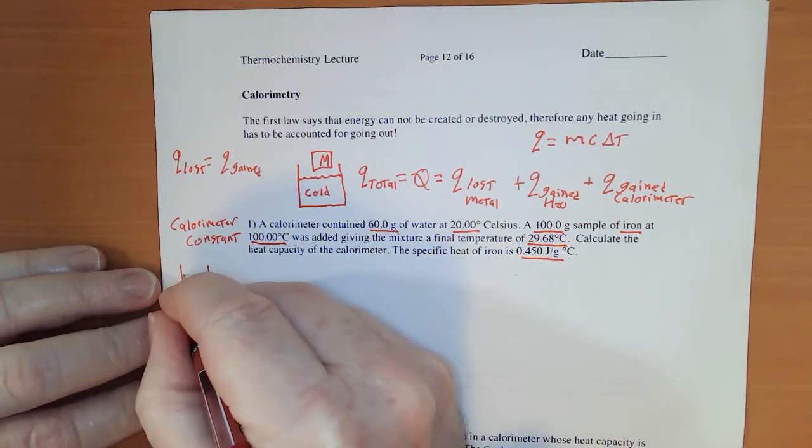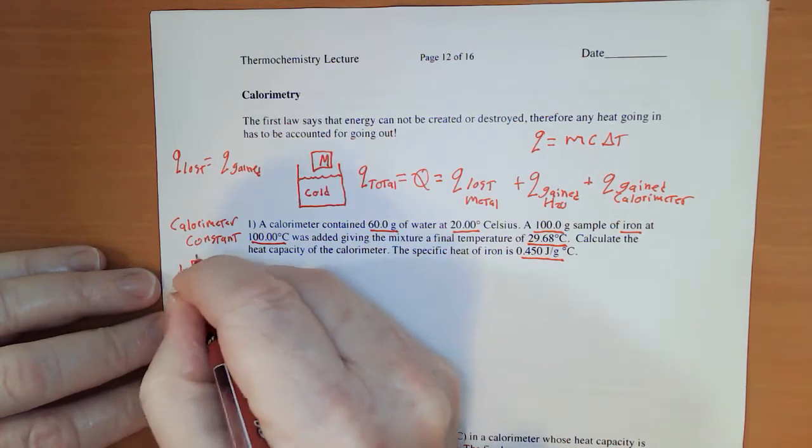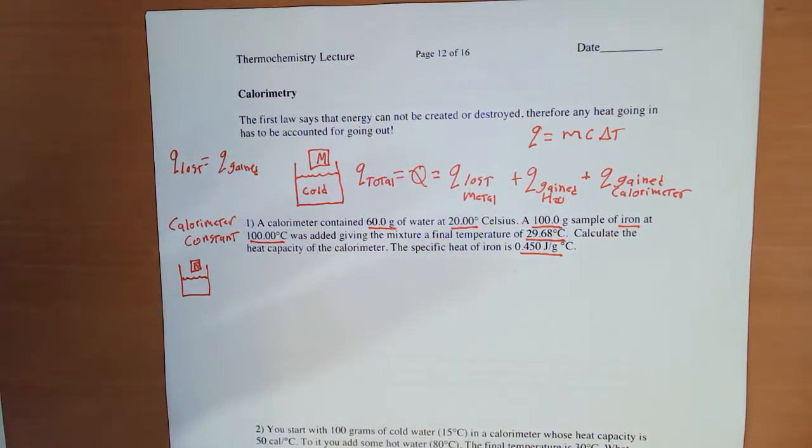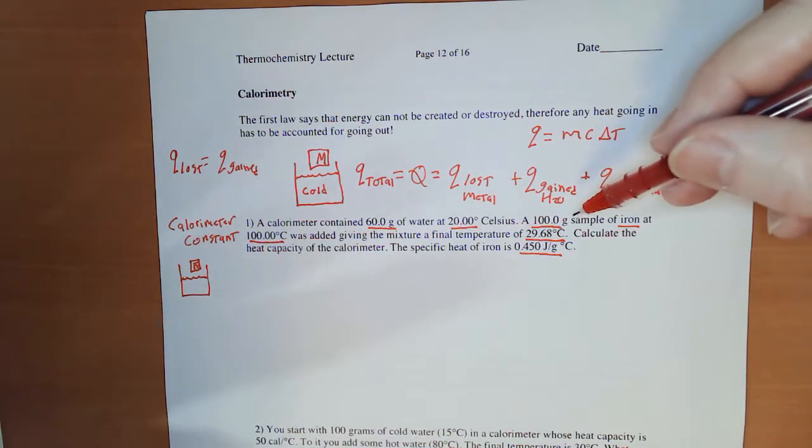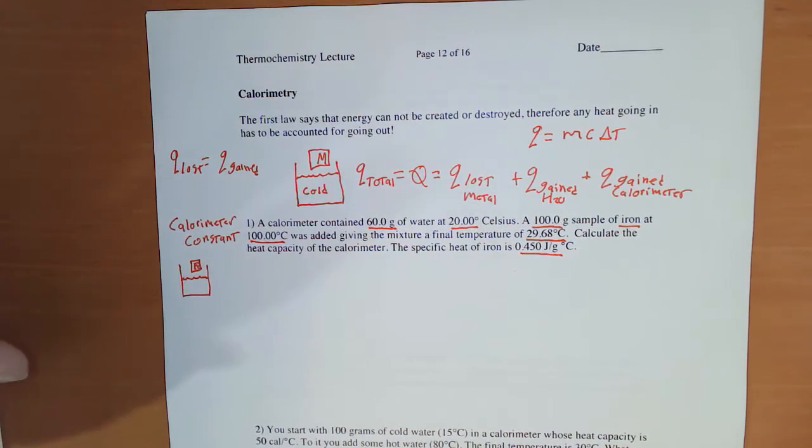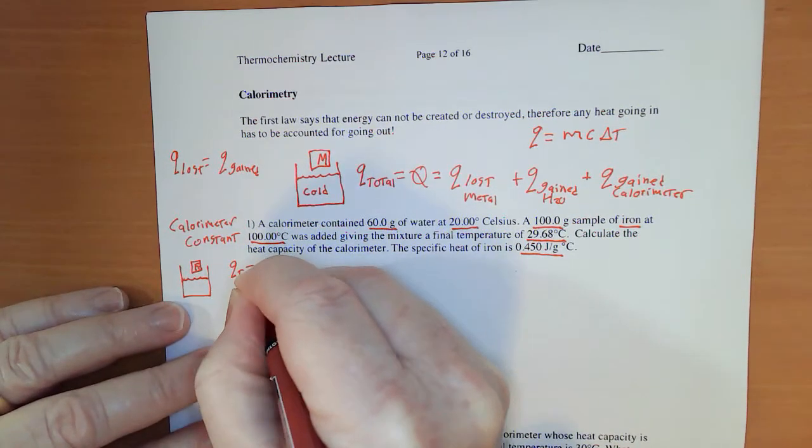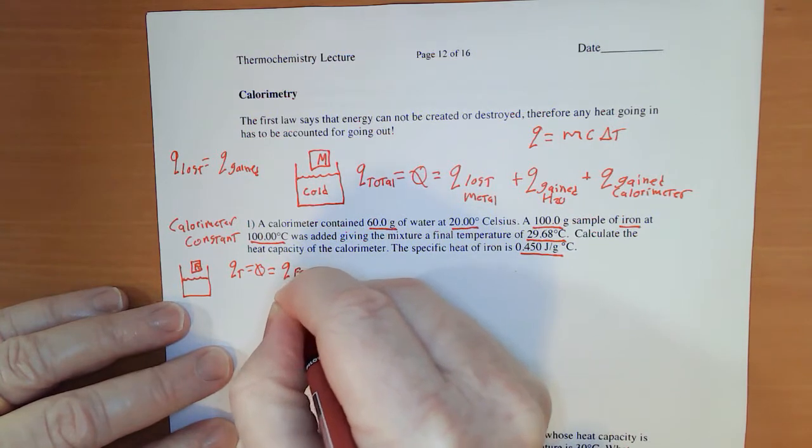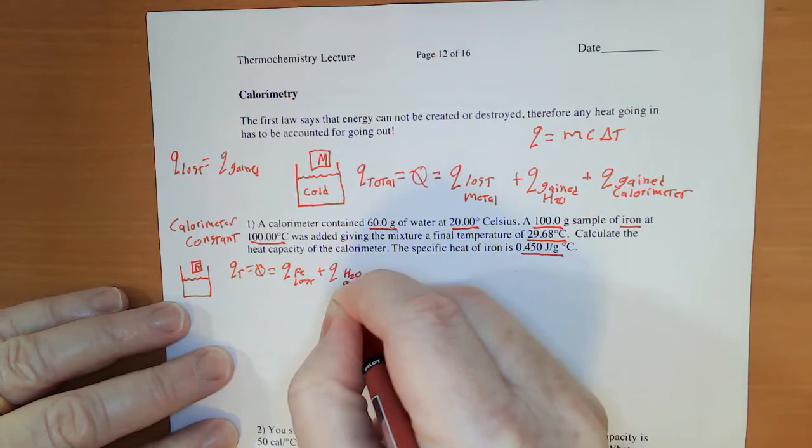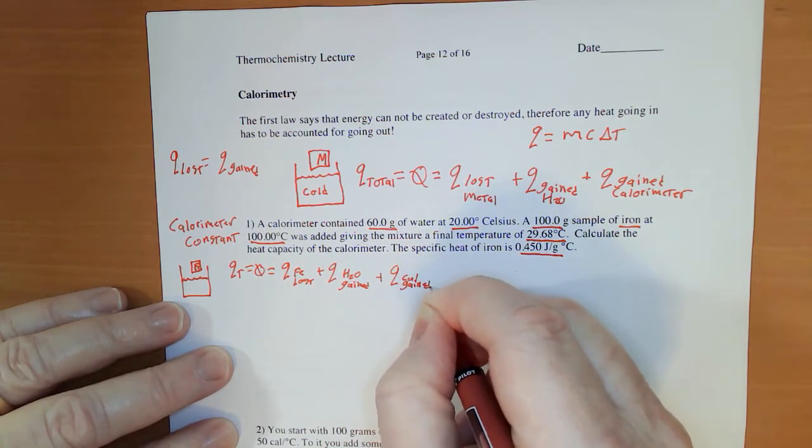Styrofoam cup, water, piece of iron, put them together, cools off, ends at 29.68 degrees. The reality is the person who taught me how to do all of this never put degrees Celsius, he put the word degree, because changes in temperature in Celsius are the same size as changes in temperature in Kelvin. Q total equals zero, which equals Q that the iron lost, plus Q that the water gained, plus Q that the calorimeter gained.